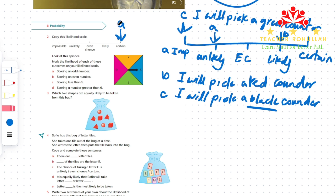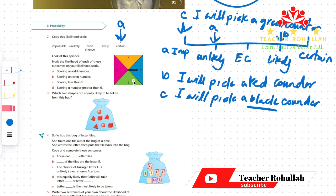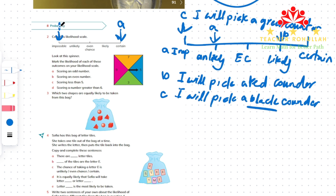A is certain because any number the spinner lands on will be an odd number — all numbers given here are odd. Part B is scoring an even number. We don't have any even numbers here, so it is impossible. Part C is scoring less than 5. Out of the four possible outcomes, only one is less than 5, so it is unlikely. Part D is scoring a number greater than 6. We have four possible outcomes, and two of them are greater than 6, so it is even chance — 2 out of 4.